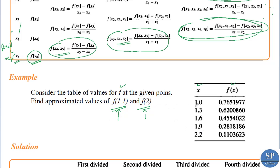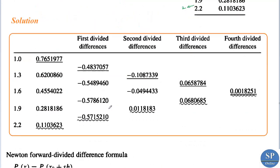We know 1.1 actually lies in this interval — 1.1 will be here, and 2 lies between 1.9 and 2.2. So to approximate f(1.1), we can use Newton's forward difference formula. For both cases, we need to construct the divided difference table, as we did in the previous lecture.